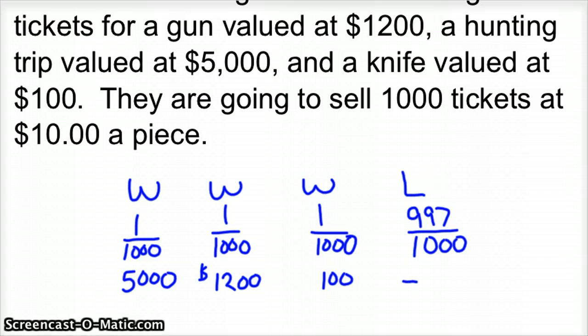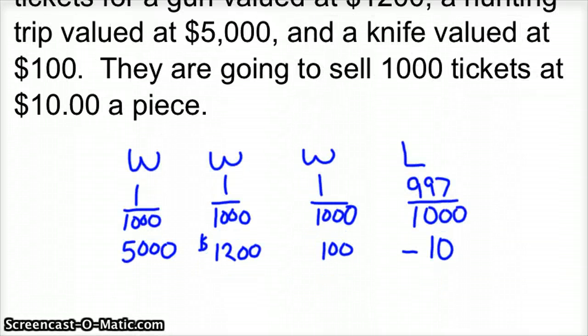You are going to lose $10 for every ticket you buy, because that's what the tickets cost. So that means I need to go back, and instead of 100, that winning is only $90, because we're investing $10 in the ticket. And $1,200 now becomes $1,190 we could win. And $5,000 becomes $4,990 that we could win, because we've already invested $10 to purchase the winning ticket.